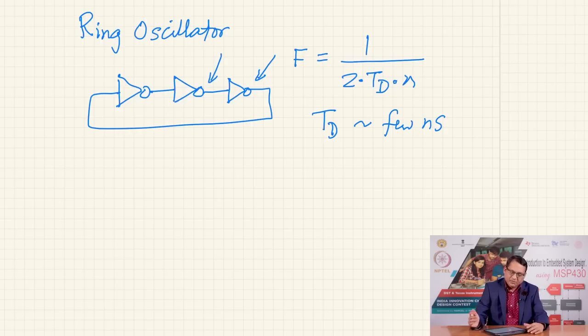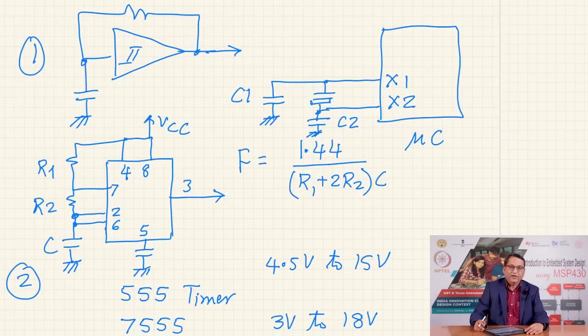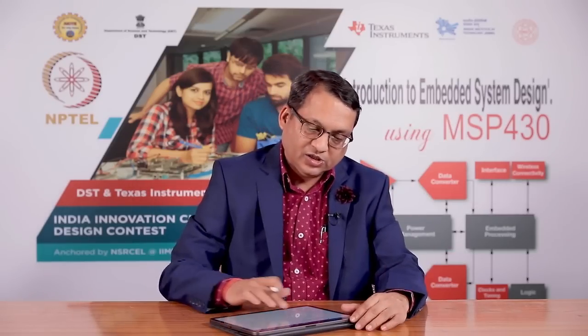For typical TTL family components the propagation delay TD is of the order of a few nanoseconds. So with three inverters at 5 ns each: 1 / (2 × 3 × 5 ns) gives roughly 1/30 ns, or about 30 MHz. Note that a 555 or 755 timer cannot provide very high frequencies beyond a couple of megahertz, so it may not be suitable for some applications. In practice, such external clock generation is usually not required because microcontrollers have built-in RC oscillators.